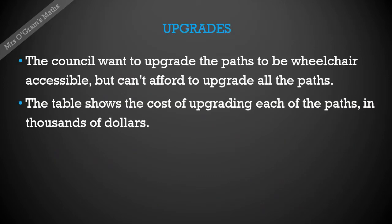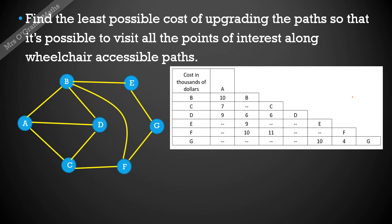So we've seen a question on traversability and one on shortest path. We're going to look at this next question now about upgrades. The council wants to upgrade the paths to be wheelchair accessible, but can't afford to upgrade all of the paths in the park. The table on the next slide is going to show us the cost of upgrading each of the paths in thousands of dollars. So there's our table. We want to find the least possible cost of upgrading the paths so that it's possible to get to all the places that you want to. So all of those points of interest, the nodes, along wheelchair accessible paths.